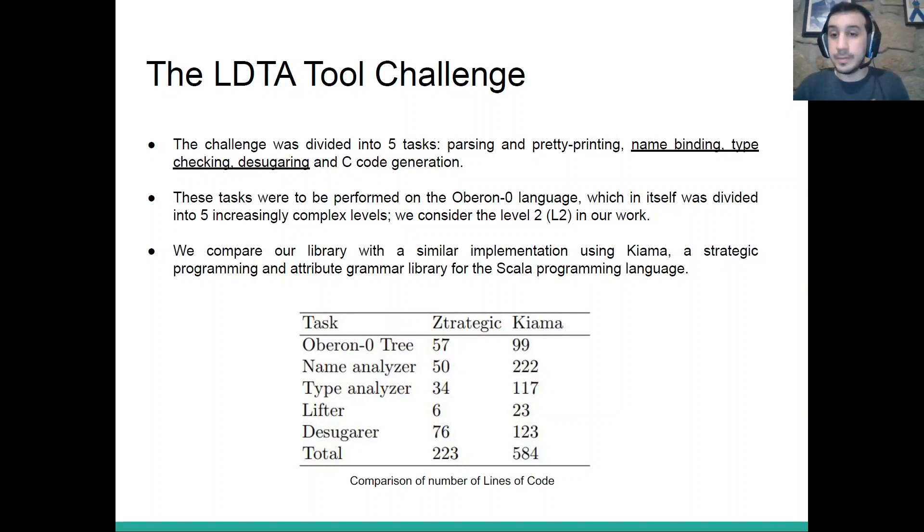And we are comparing this with Kiama, which is a library for strategic programming and attribute grammars for the Scala programming language. We are not comparing runtime because it would not be a fair comparison, because we are using different languages. We are comparing number of lines of code, which is also not a fair comparison. However, we believe that this difference from 233 to almost 600 lines of code, we can convince you that our library is also very powerful in terms of expression.